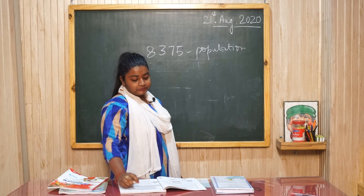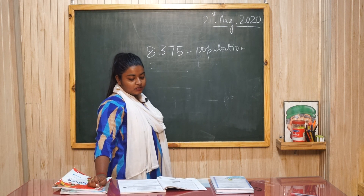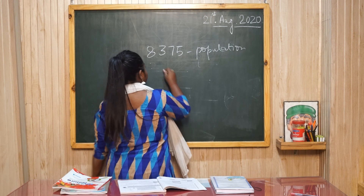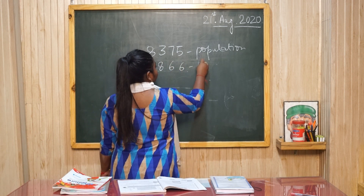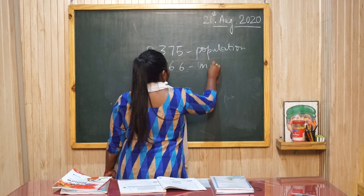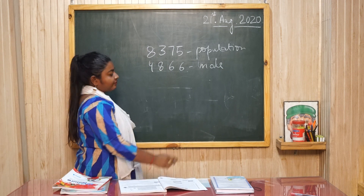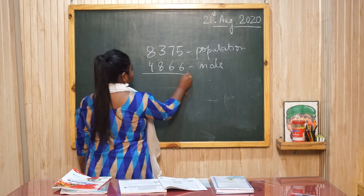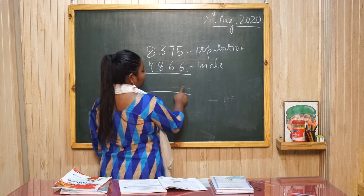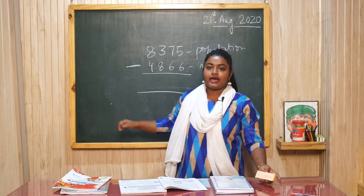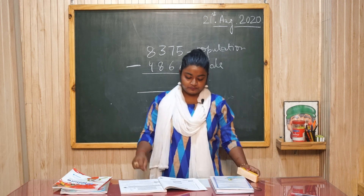Then what he is saying? The number of males is 4,866. 4,866 male हैं. And what he is asking for? How many number of females are left? You will deduct, the answer will come. You will write. Therefore, that much females are there in a village.